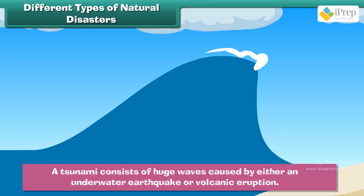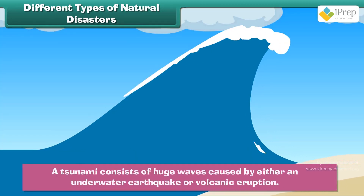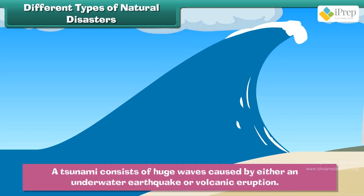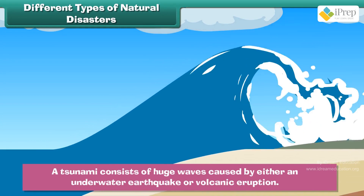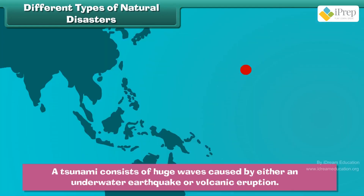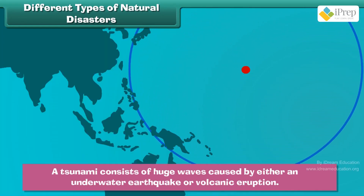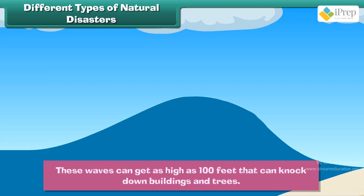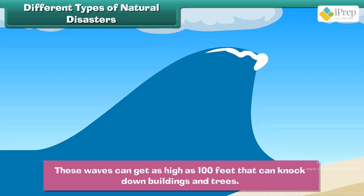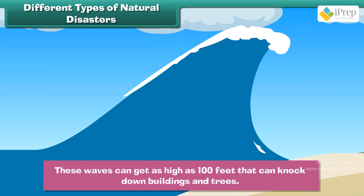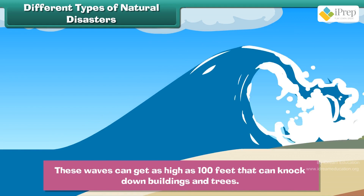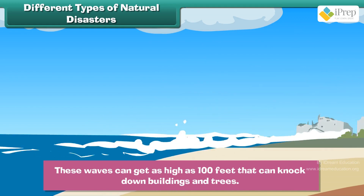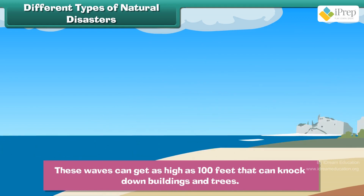A tsunami consists of huge waves caused by either an underwater earthquake or volcanic eruption. These waves can get as high as 100 feet and can knock down buildings and trees.